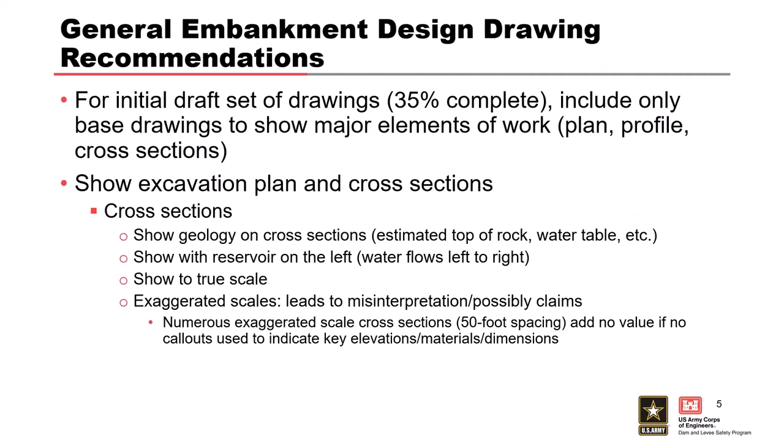Cross-sections should be at true scale. Exaggerated scales are something I've seen on some sets over the years. You show enough cross-sections for a full understanding of how to construct the project, but you don't cut them every 50 feet like you would in a highway design. I've seen cases where cross-sections have no call-outs and no dimensions, and they have no value whatsoever. An exaggerated scale can make something that is a 3-horizontal-to-1 slope look like a 1-to-1 slope. I would not use exaggerated scales on embankment cross-sections - there is a place for exaggerated scales, but not for embankment cross-sections.